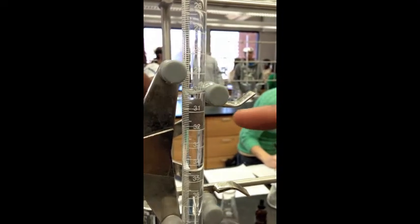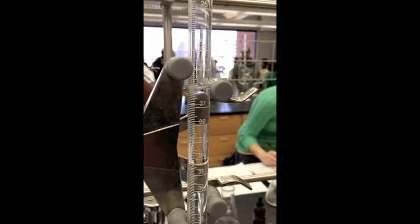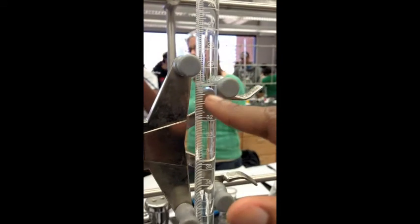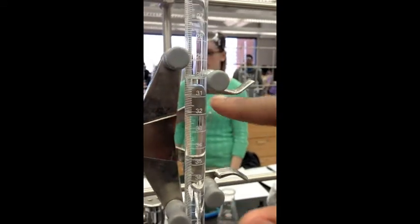To take the final volume, read from the bottom of the meniscus. You take that reading, subtract it from the initial, and then you have your delta volume.